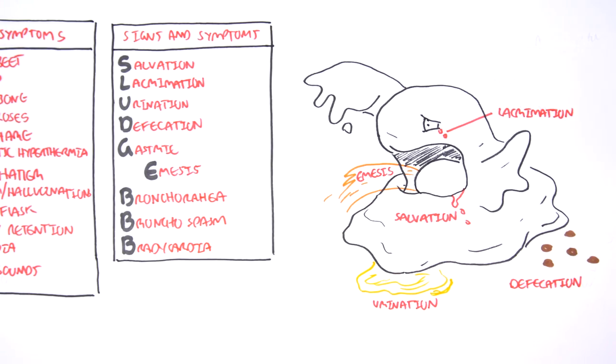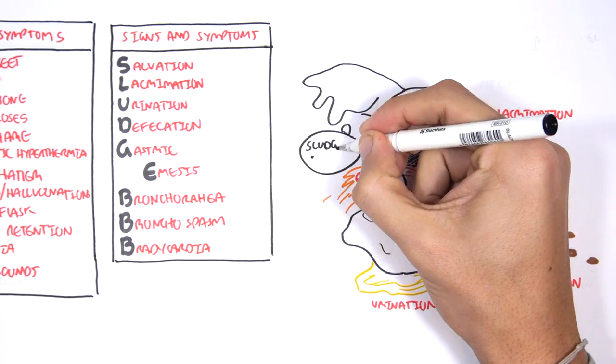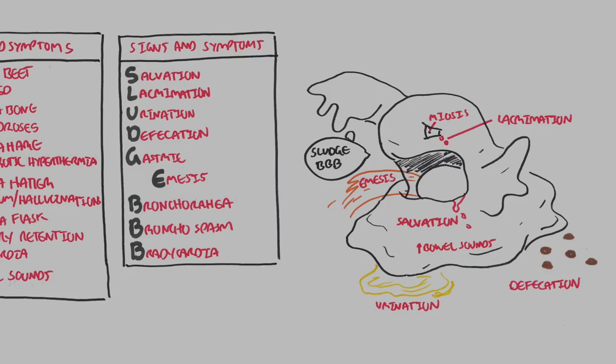Other signs include meiosis and you have increased bowel sounds. And that was cholinergic toxidrome.